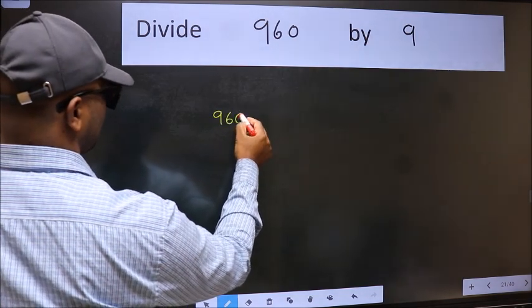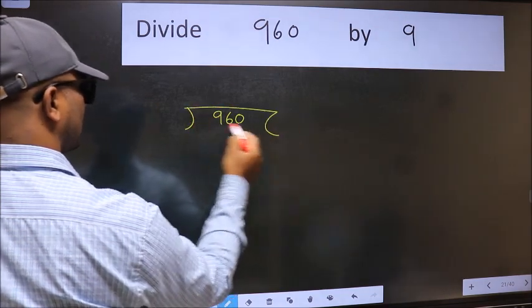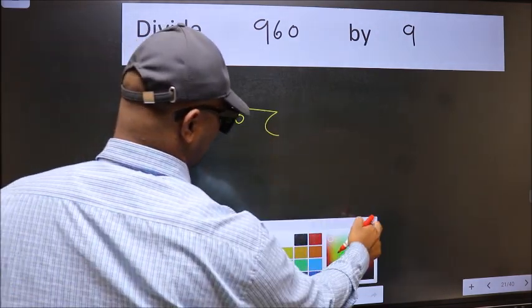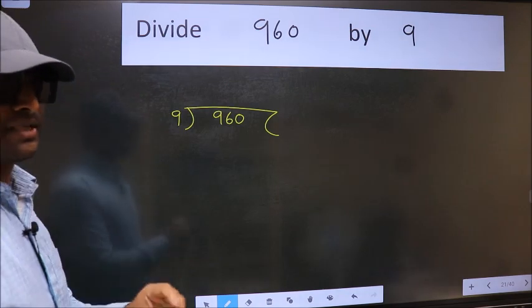960 here and 9 here. This is your step 1.